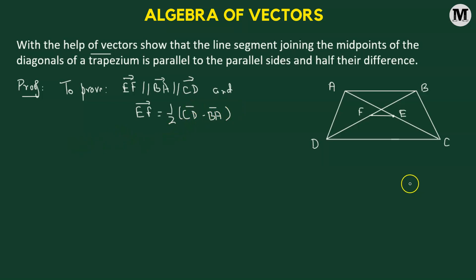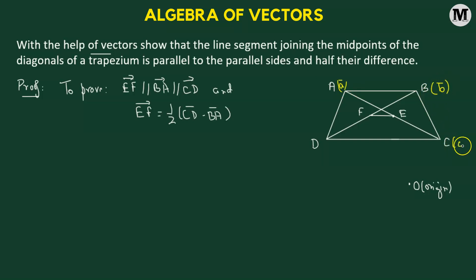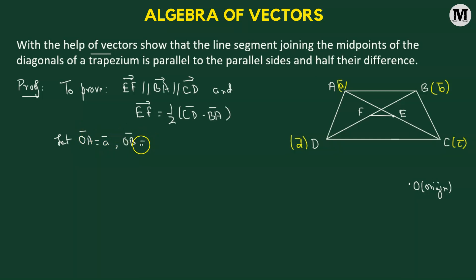Let us begin by considering a point O, which is the origin of some coordinate system. With respect to this origin, we define the position vector of each vertex. The position vector of vertex A is vector A, B is vector B, C is vector C, and D is vector D. That means OA vector corresponds to vector A, OB vector to vector B, OC vector to vector C, and OD vector to vector D.